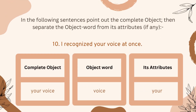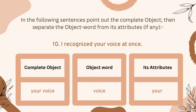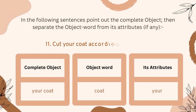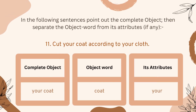Number ten: 'I recognized your voice at once.' Here, 'your voice' is the complete object. 'Voice' is the object word, and 'your' is the attribute.